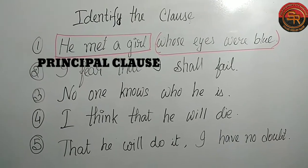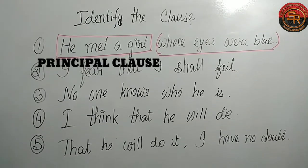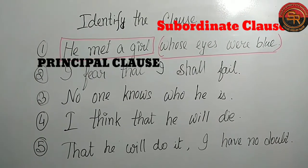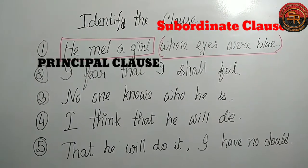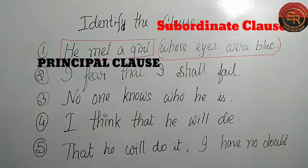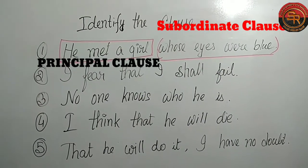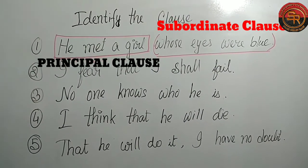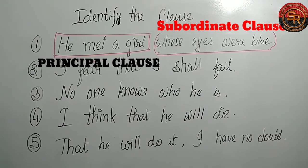And 'whose eyes were blue' — this part is describing exactly about the girl, so this is our subordinate clause. Let's write it down.